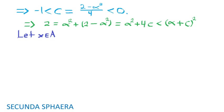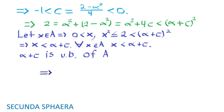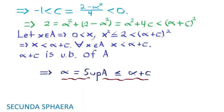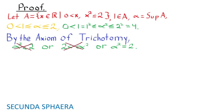Let x be in A; then 0 is less than x and x squared is less than or equal to 2, which is less than (alpha plus c) squared. Therefore x is less than alpha plus c, and hence for all x in A, x is less than alpha plus c. This means that alpha plus c is an upper bound of A, so it must be greater than or equal to the supremum of A. But this is impossible, since alpha plus c is less than alpha. This is another contradiction which arises from supposing that 2 is less than alpha squared. Hence, it is impossible for 2 to be less than alpha squared.